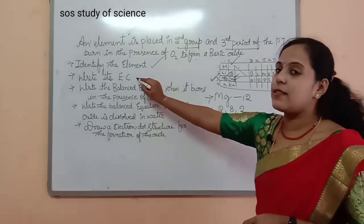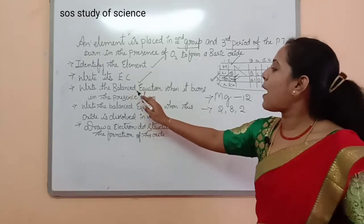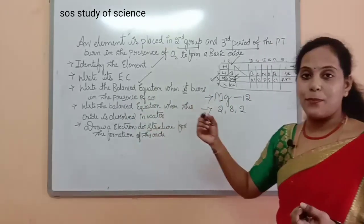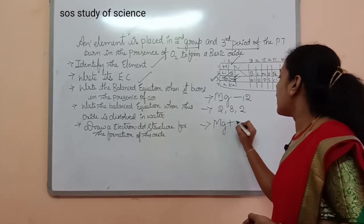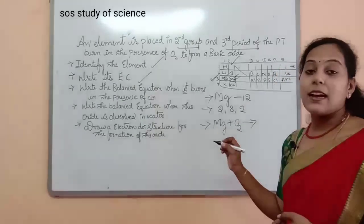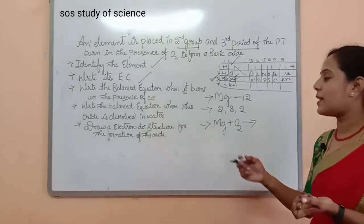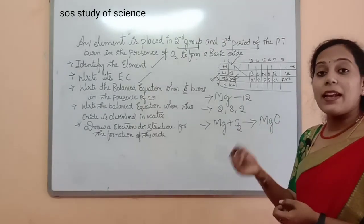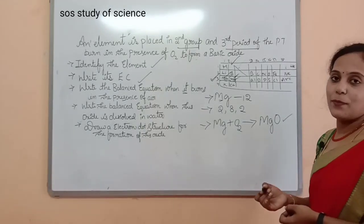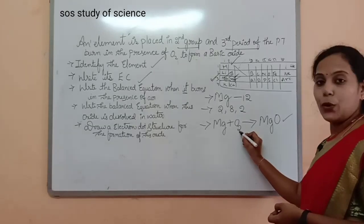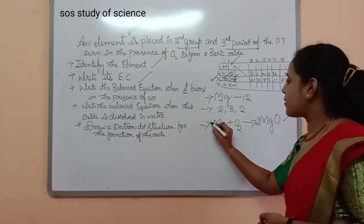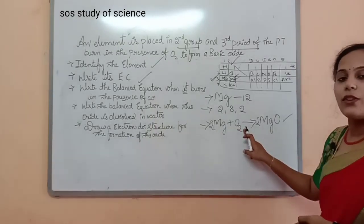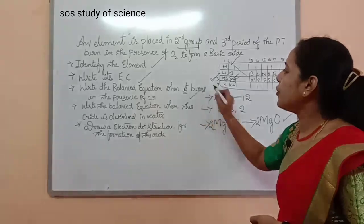Write the balanced equation. The third question: write the balanced equation when magnesium burns in the presence of air. When magnesium burns in the presence of oxygen, it forms magnesium oxide — a metallic oxide. To balance: 2Mg + O₂ gives 2MgO. Magnesium burns in the presence of oxygen to give magnesium oxide.